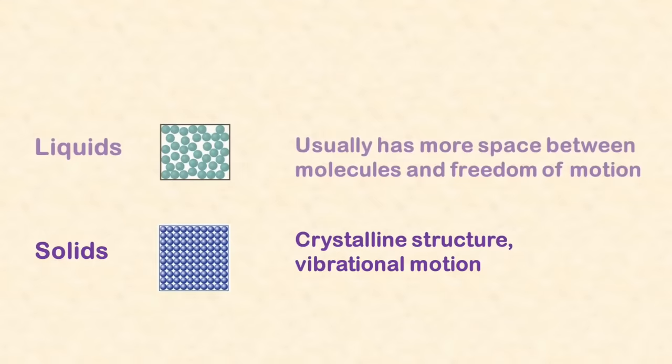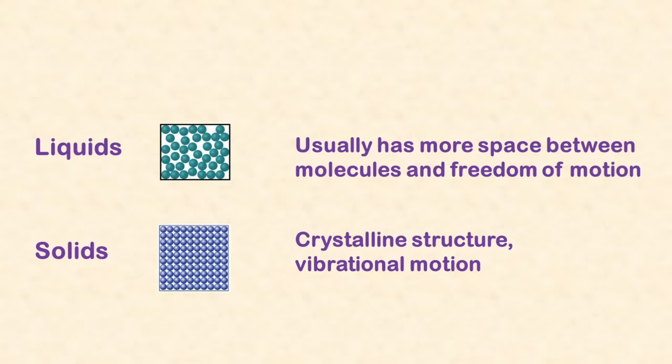Solids are usually crystalline, with molecules packed tightly together, having a fixed shape and volume. Liquids usually have a little more space between the molecules, so they can slip and slide around each other, which is why a liquid flows. Gases have molecules that are basically independent of each other, so gases can expand or be compressed much more easily.